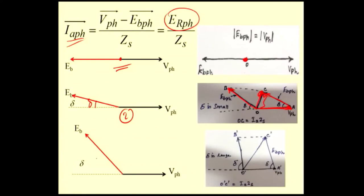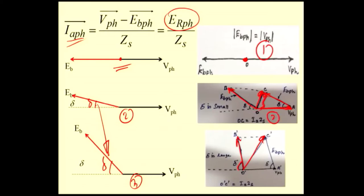In the third case, you are increasing the load further, so delta increases more. Comparing second and third diagrams: delta is less in second case, delta is more in third case, because load is increased. Er phase magnitude also increases. First case: Er phase is zero because delta is zero. Second case: delta is somewhat more, so Er phase is more. Third case: delta is even more, so Er phase is further increased. Er phase increasing means Ia increases. In any motor, if you increase the load, the current will increase.